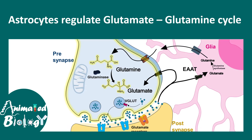In a healthy brain versus a multiple sclerosis brain, there is evident cortical demyelination and white matter demyelination due to the defect in the myelin sheath.